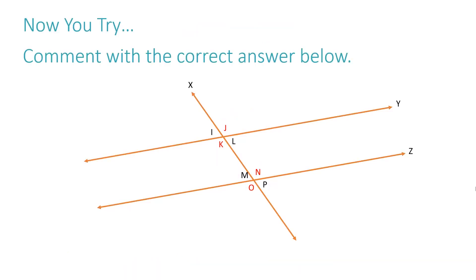Now you try. Comment with the correct answer below, then head over to my website and click on video answers to see if your answer is correct. Using this pair of parallel lines cut by a transversal, list a pair of alternate exterior angles.